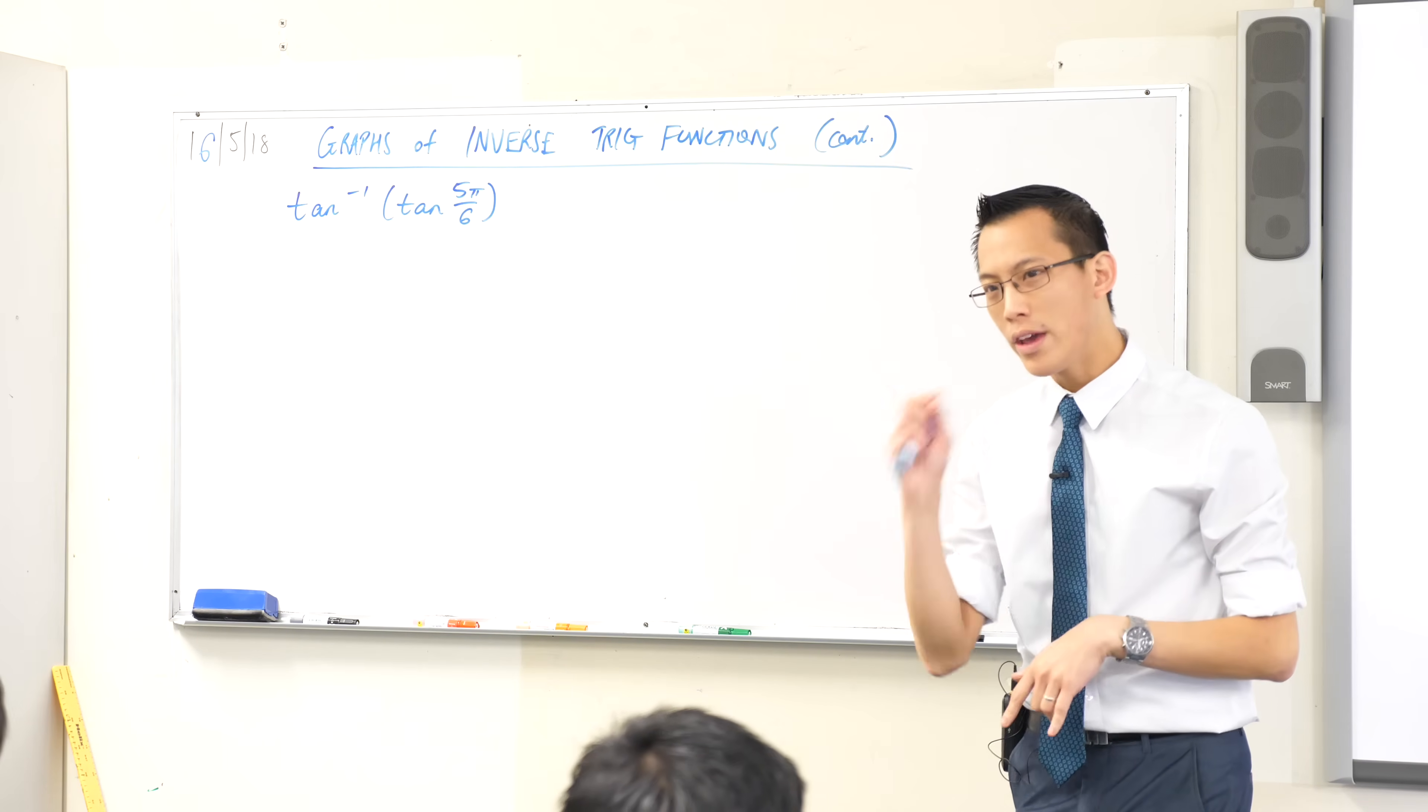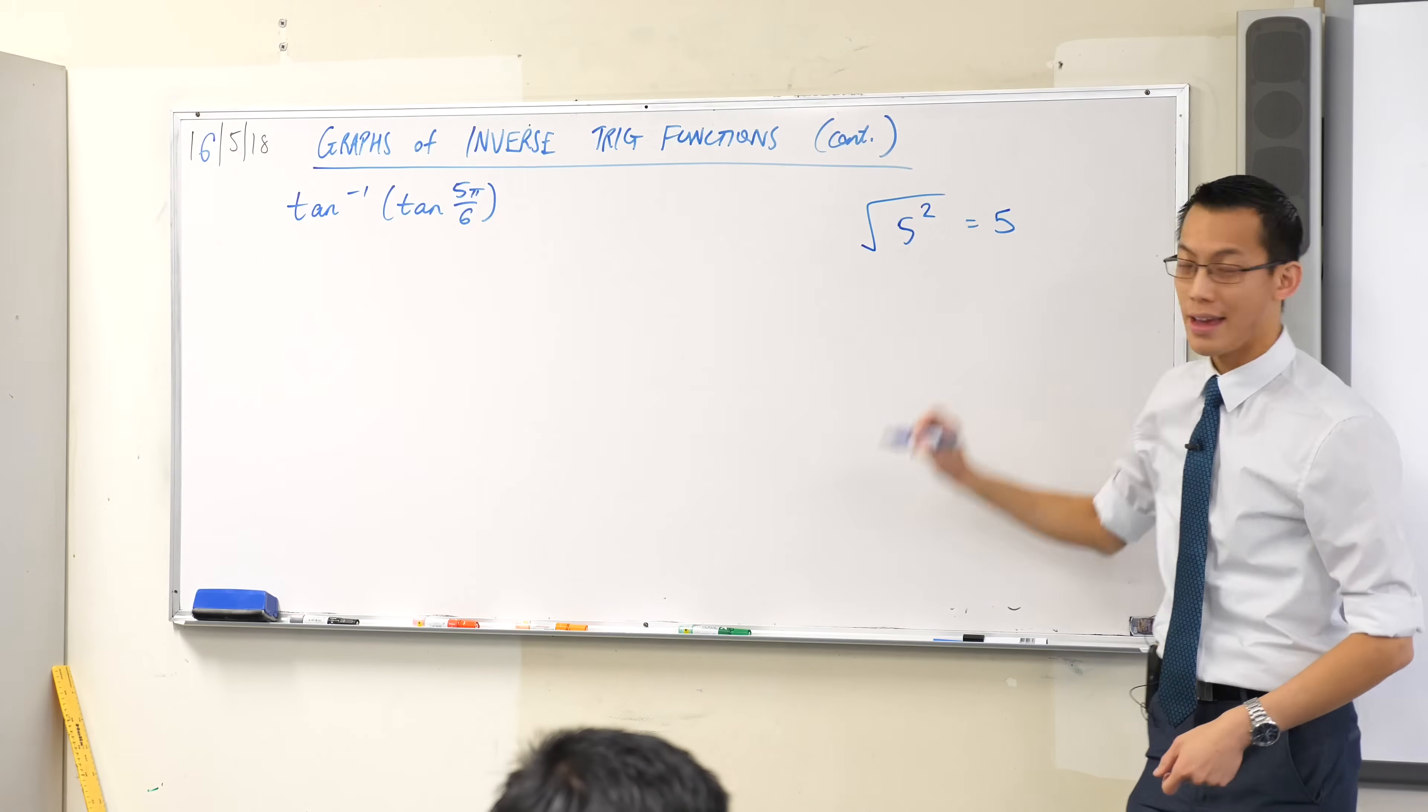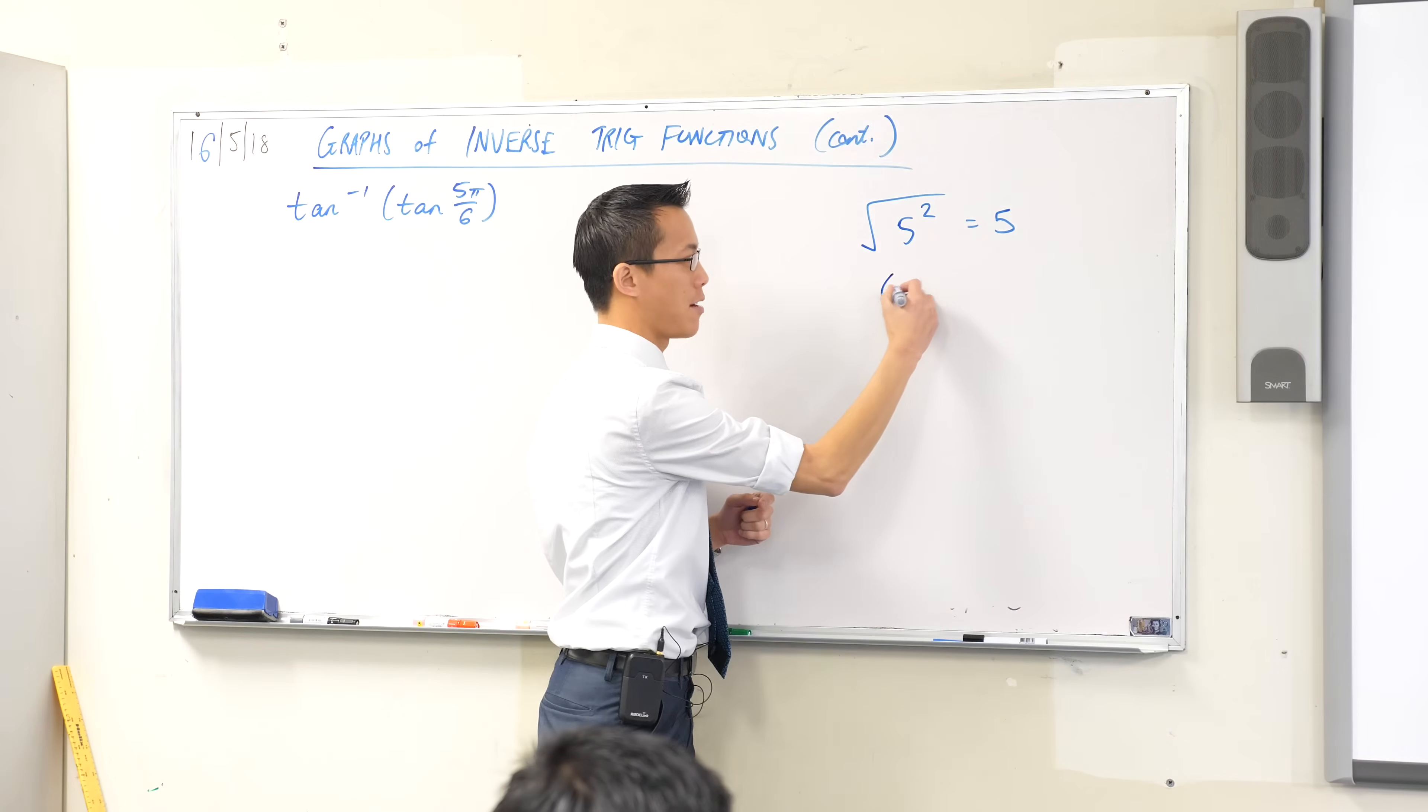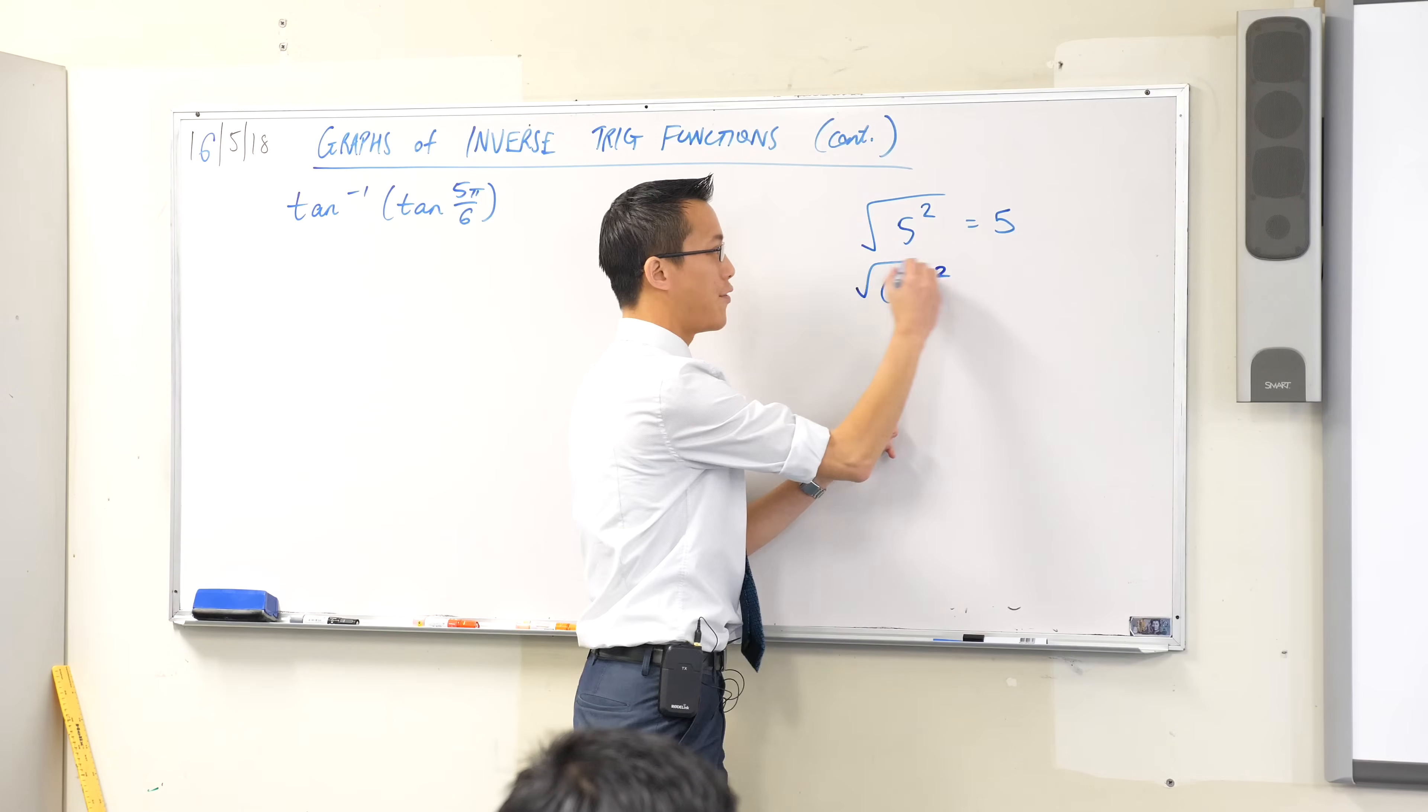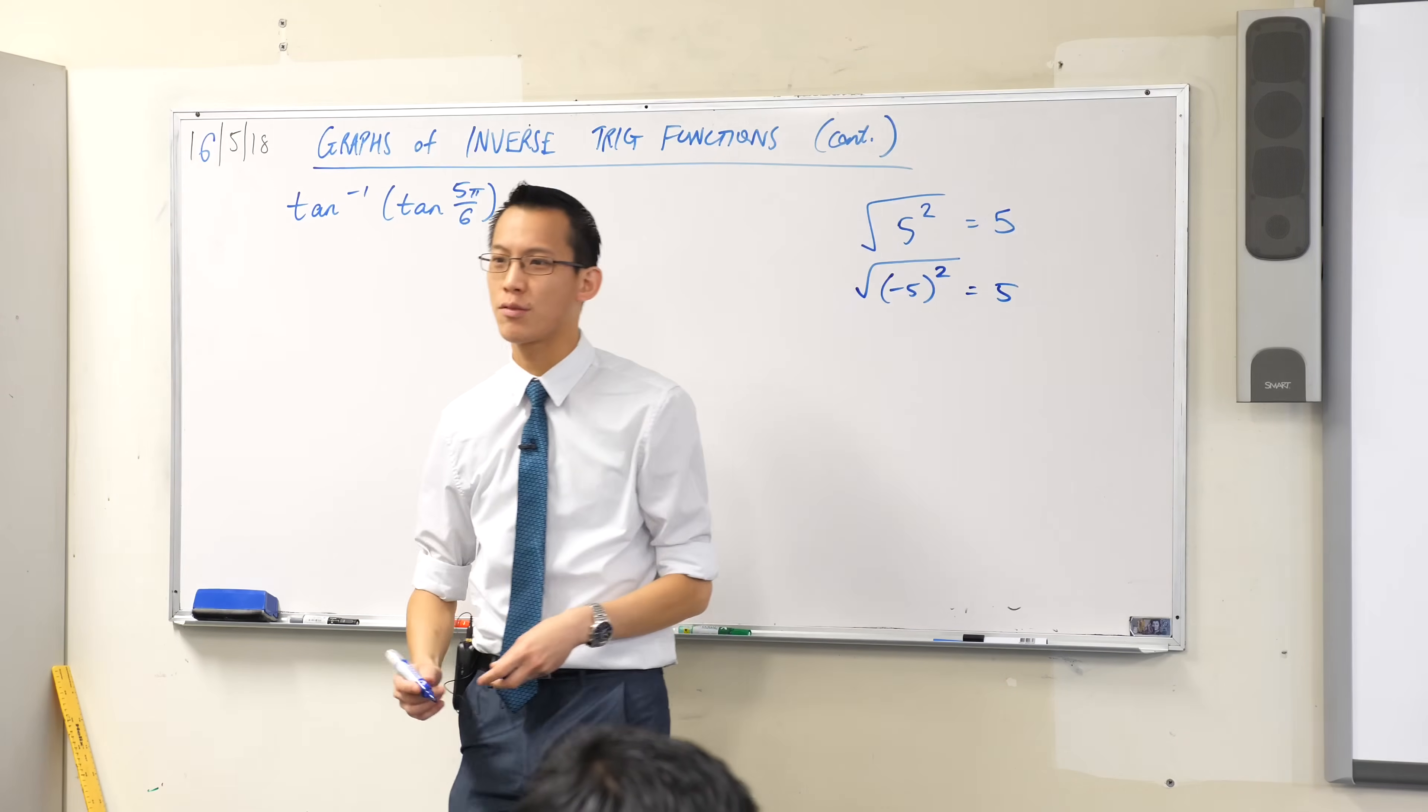However, we already know from an example like that, while the square root of 5 squared is sure enough equal to 5, that doesn't always work out so neatly. Sometimes, for instance, if you take a number and then you apply an operation, a function rather, and then apply its inverse, you do not land back where you started. In fact, that's the opposite of what I wanted.